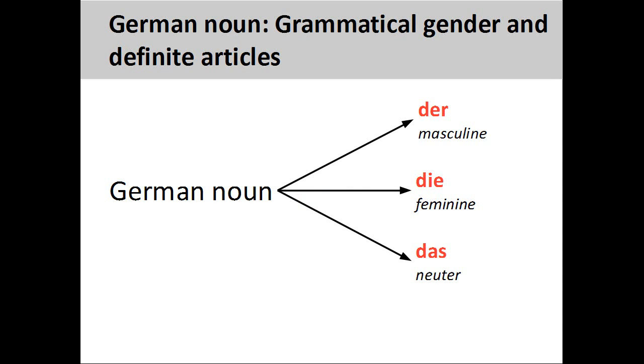The grammatical gender of a noun is seen in its definite article. 'Der' indicates a masculine noun, 'die' a feminine noun, and 'das' a neuter noun.